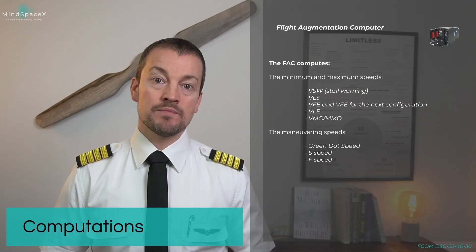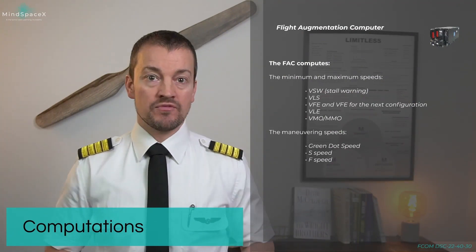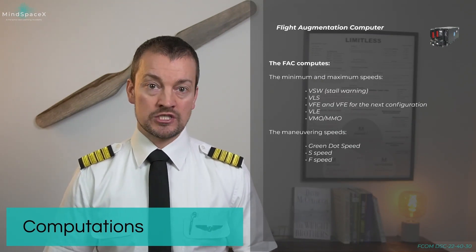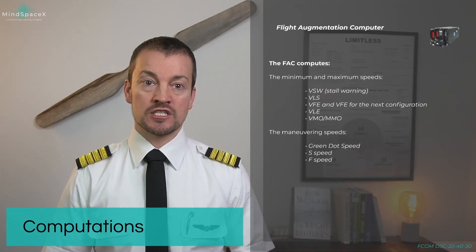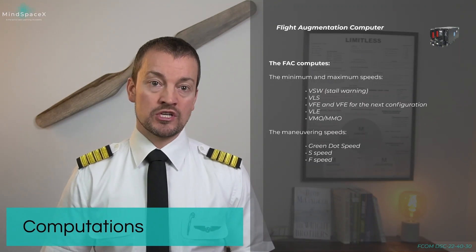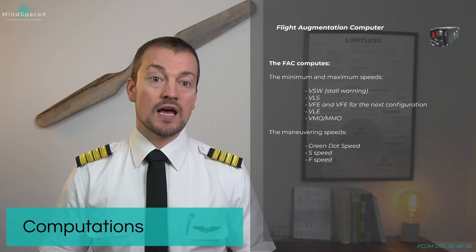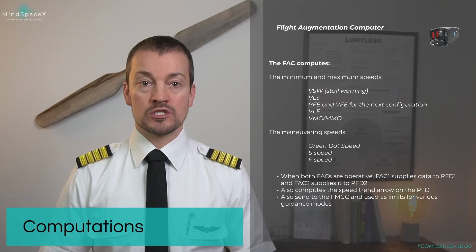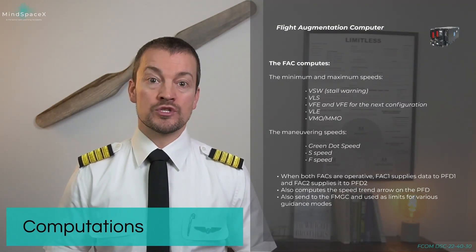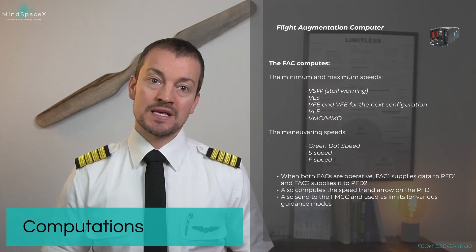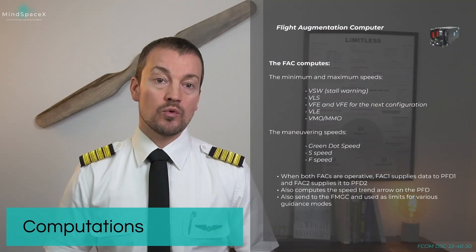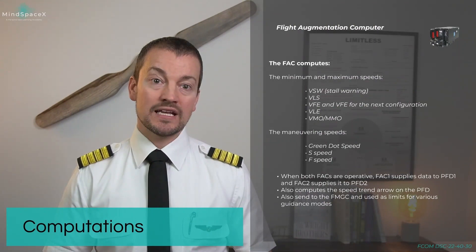The flight augmentation computer calculates minimum and maximum speeds such as stall warning speeds, VLS, VFE and VFE next speeds, VLE for landing gear extended, and VMO and MMO for the current condition. It also calculates maneuvering speeds such as green dot speed, S speed, and F speed for the given configuration, aircraft CG, and aerodynamic data. When both FACs are operative in normal conditions, FAC 1 supplies PFD 1 with speed information and FAC 2 supplies PFD 2. It also computes the speed trend vector shown on the PFDs, which indicates if acceleration or deceleration is greater than 2 knots. Finally, it calculates and sends information to the flight management and guidance computer, which is used for various guidance modes.